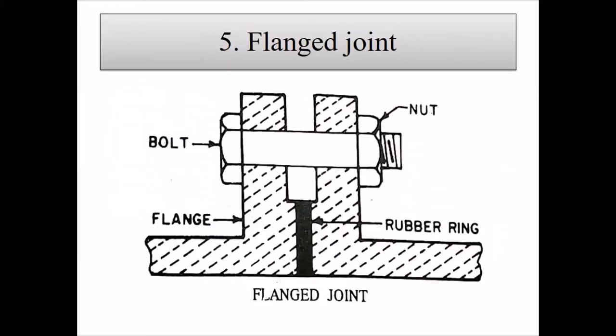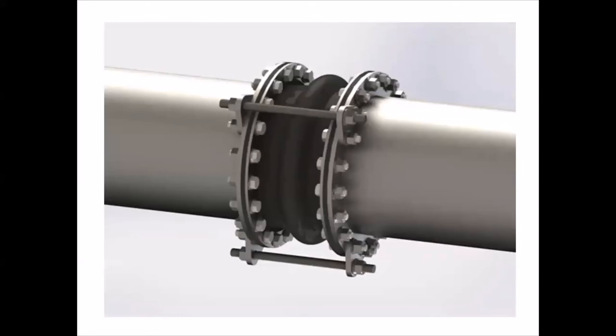The flange joint is recommended for temporary work where the pipeline may be dismantled or shifted after use. The end of the pipe is provided with a wide flange with several holes for nuts and bolts. When joining, a rubber gasket is inserted between the flanges and the nuts are tightened to make the joint watertight.